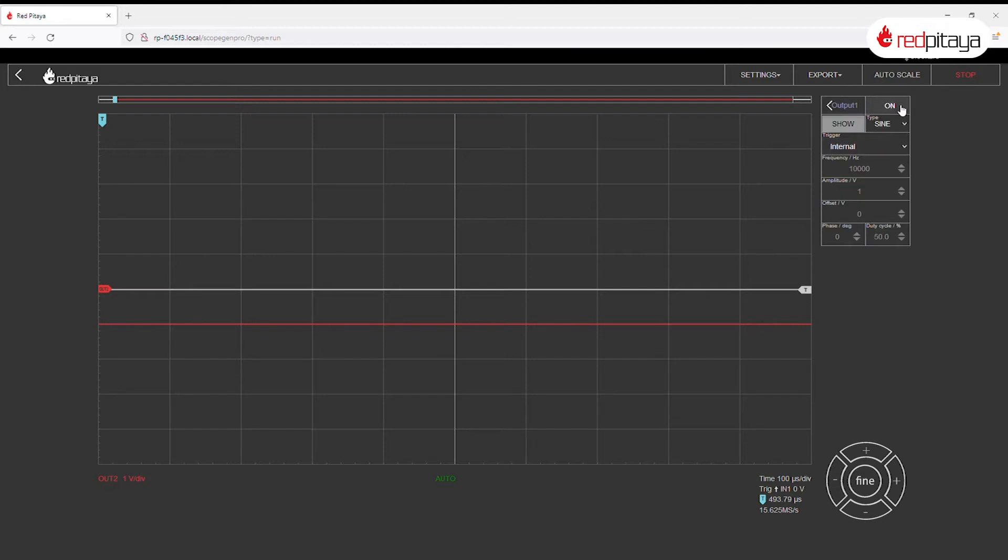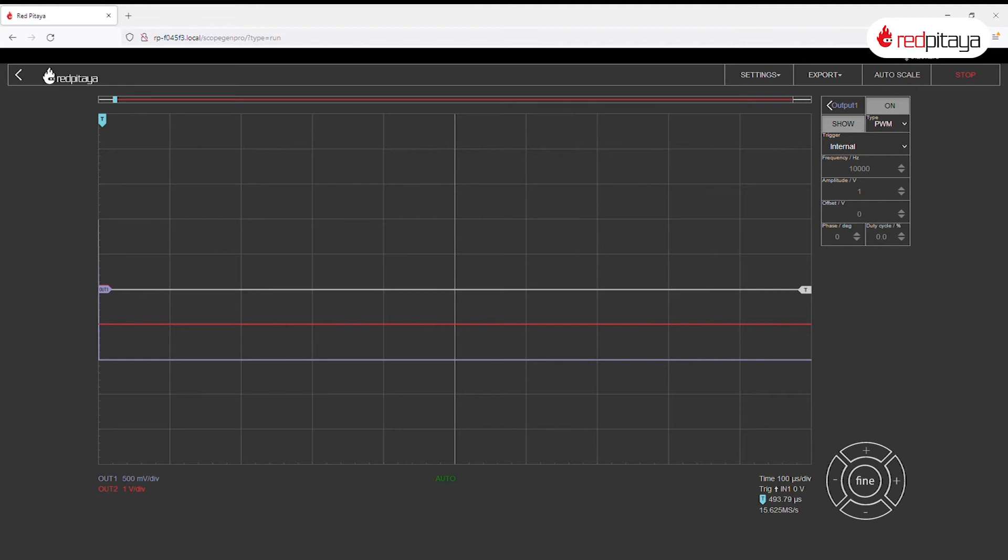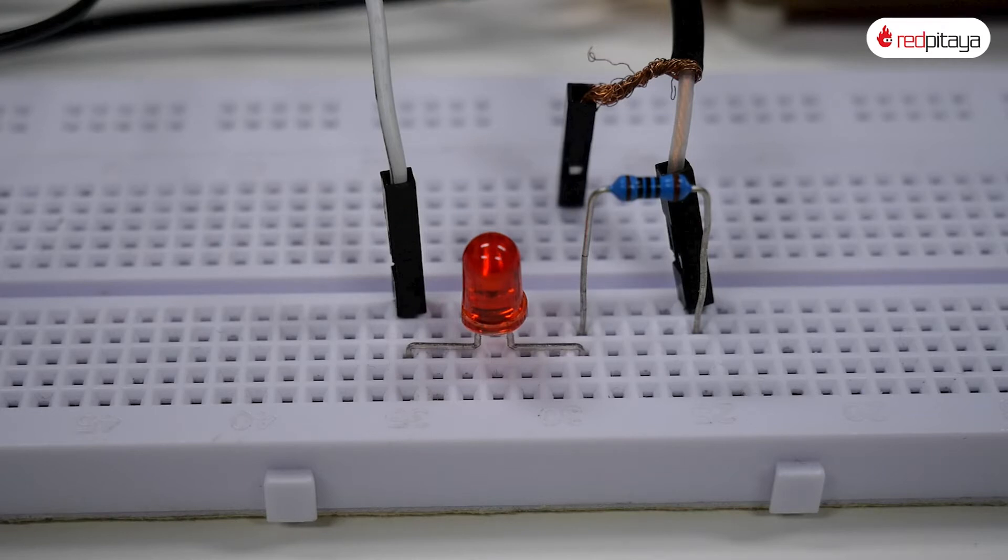I will be changing the PWM's duty cycle during the demo, but let's start by setting it to 0%. At the duty cycle set to 0, LED is turned off completely. That should come as no surprise.